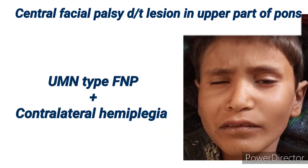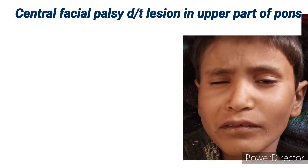If the lesion is in the upper pons where fibers are descending in the corticobulbar tract, the child will have UMN-type facial nerve palsy with contralateral hemiplegia.